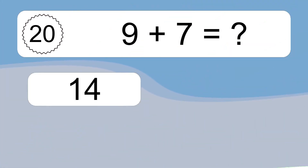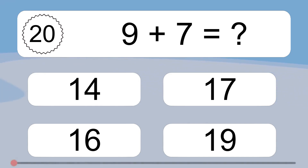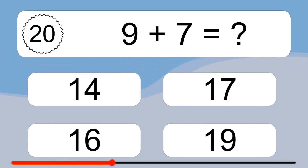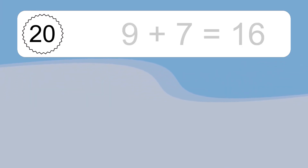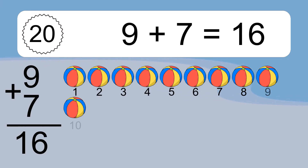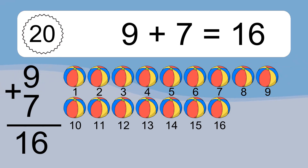9 plus 10 equals what? 9 plus 7 equals 16. Let's count it. 1, 2, 3, 4, 5, 6, 7, 8, 9, 10, 11, 12, 13, 14, 15, 16.